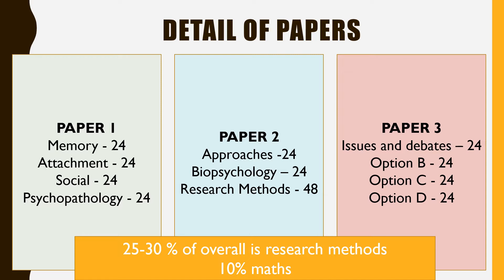Paper two has a slightly different format. It's still out of 96 marks. Here we've got approaches for 24 marks and biopsych for 24 marks. But then there's the beast of research methods on paper two, worth 48 marks. Although research methods is worth 48 marks in paper two, it will also appear across all papers — that's why I said paper one technically has five topics, because there's a proportion of research methods marks across those different papers.